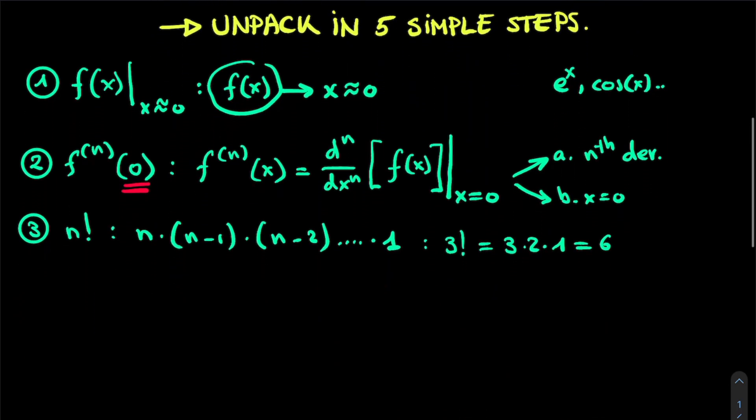Now we all know, of course, what x to the power of n is, but let's just write it down. So we have x to the power of n, which is basically x times x times x n times.